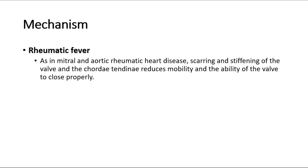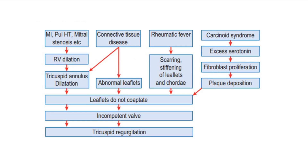In cases of rheumatic fever, as in mitral and aortic rheumatic heart disease, scarring and stiffening of the valve and the chordae tendineae reduces mobility and the ability of the valve to close properly. This flow chart shows the various causes leading to tricuspid regurgitation, summarizing what was explained previously. That's all for this video. Thank you.